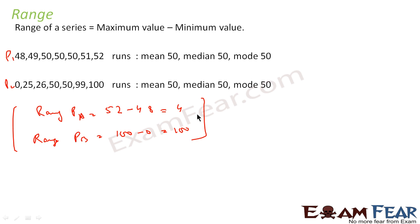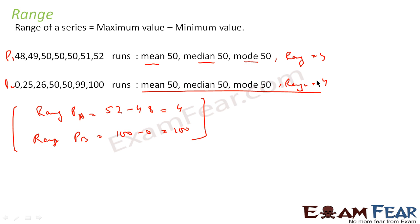If I also have the data that mean, median, and mode are 50 for both players, and the range for Player A is 4 while range for Player B is 100, then combining both I can get a clearer picture. I can tell that Player A is better because Player A is more consistent and the average runs are the same. So only with range it doesn't give a clear picture, but range combined with mean, median, and mode gives a clearer picture.